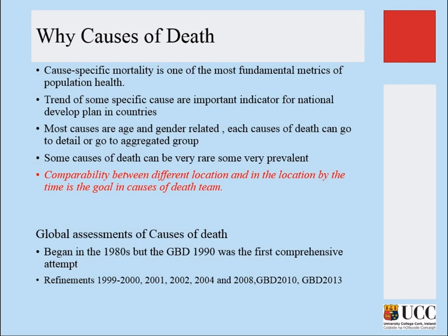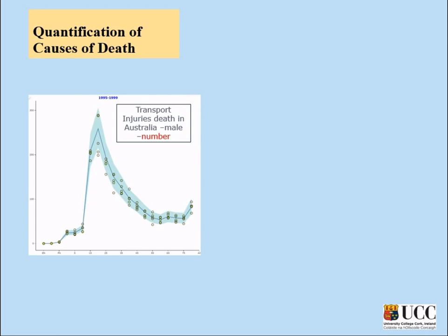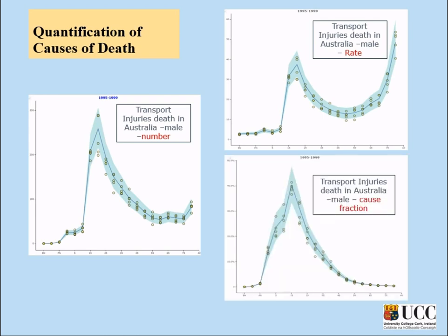Death is not only of interest for health metrics — it's also about comparability across countries. If you want to know how many deaths are occurring in the UK and Ireland, you have to compare. If you don't have certain metrics to compare across countries, how do you know which country is improving in terms of death or disability? Death can be quantified as absolute numbers, as a rate per 100,000 or per 1,000 population, or as a cause fraction — the number of deaths from one particular risk factor divided by all deaths from all causes in a given country.